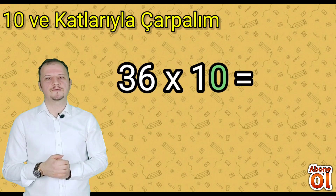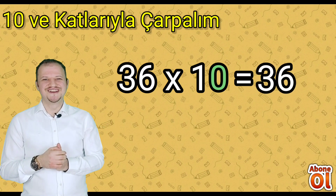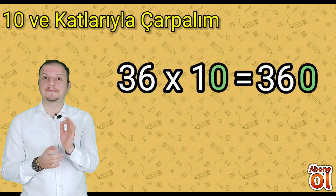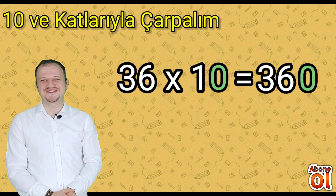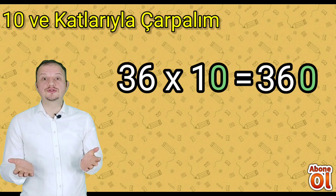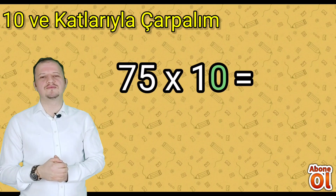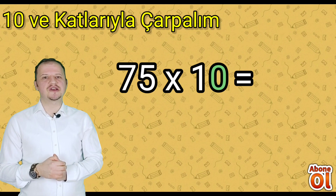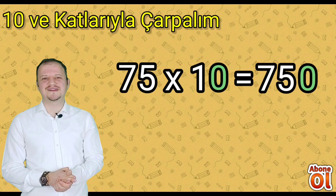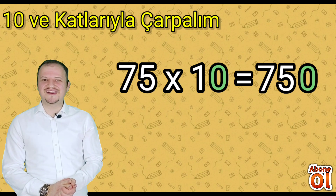36 ile 10 sayılarını çarpıyoruz. 10 ve katı olmayan 36'yı hemen çarpım bölümüne ekliyoruz. Ve 10'daki bir tane sıfırı 36'nın sağına ekliyoruz. Sonuç nedir? 36 ile 10'u çarptığımız zaman sonuç 360'dır. Bir örnek daha yapalım. 75 ile 10'u çarpalım bu sefer. 75'i aynen çarpım bölümüne ekliyoruz ve 10'daki bir tane sıfırı 75'in sağına eklediğimiz zaman sonuç 750'dir.